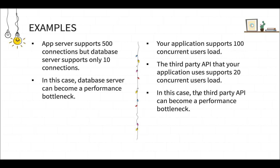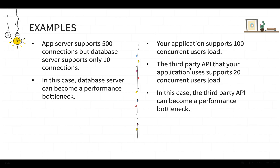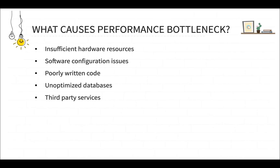Similarly, your application supports 100 concurrent users load, but a third-party API that your application uses supports only 20 concurrent users. In this case, the third-party API becomes the performance bottleneck, because although your application is able to concurrently support 100 users, the third-party API will not be able to do that since it supports only 20 concurrent users. So the third-party API is the performance bottleneck.